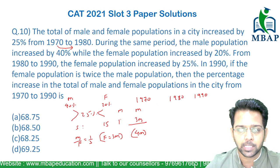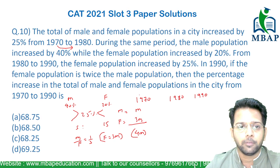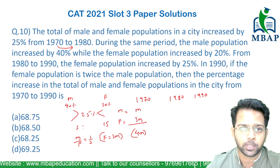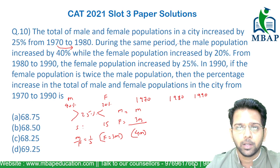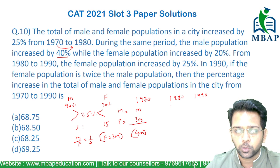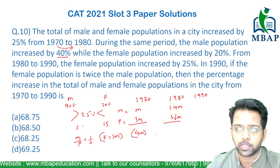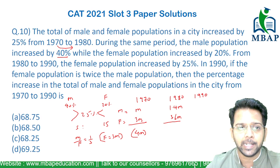This is my male and this is my female. From 1970 to 1980, the male and female population is going up by 25% overall. The male population grows by 40%, so this value becomes 1.4m. The female population grows by 20%, so 3m becomes 3.6m.